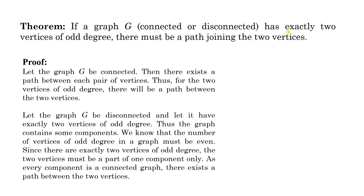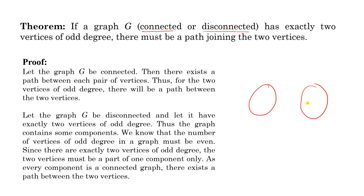The second theorem: if a graph G — whether connected or disconnected — has exactly two vertices of odd degree, then there must be a path joining those two vertices. For the connected case: since G is connected, a path exists between every pair of vertices, so certainly between the two odd-degree vertices. For the disconnected case: suppose G has two or more components — for simplicity assume two components.